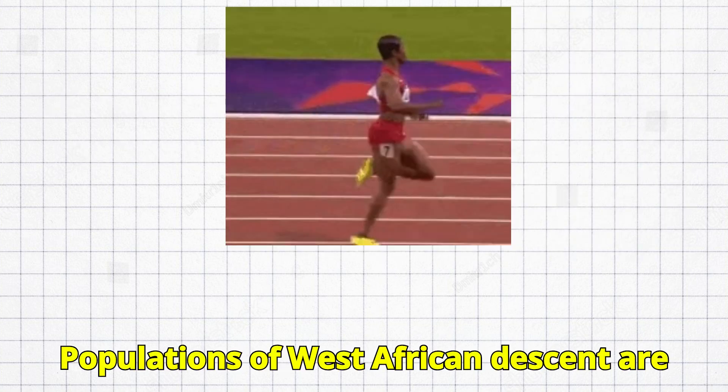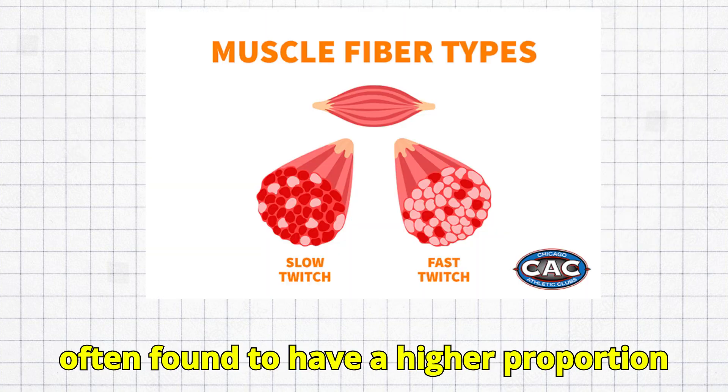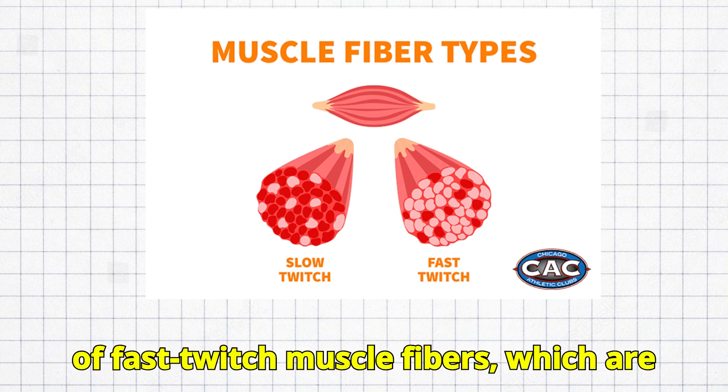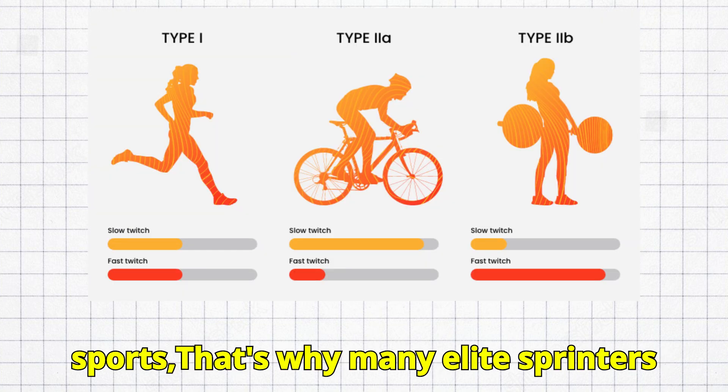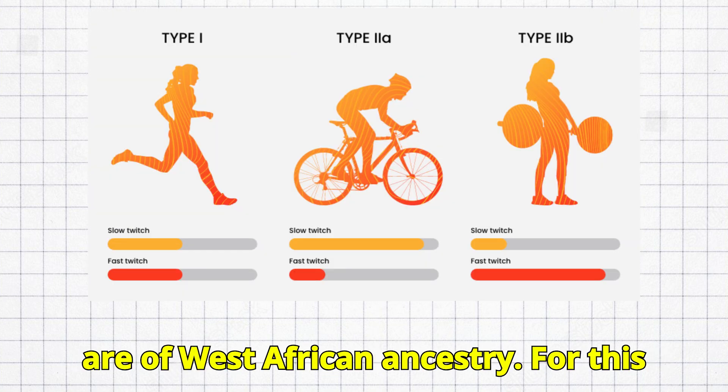Populations of West African descent are often found to have a higher proportion of fast-twitch muscle fibers, which are advantageous in sprinting and explosive sports. That's why many elite sprinters are of West African ancestry.